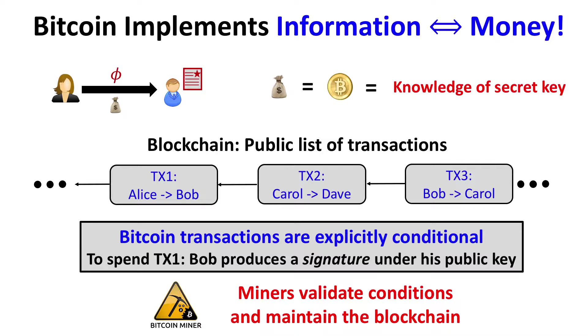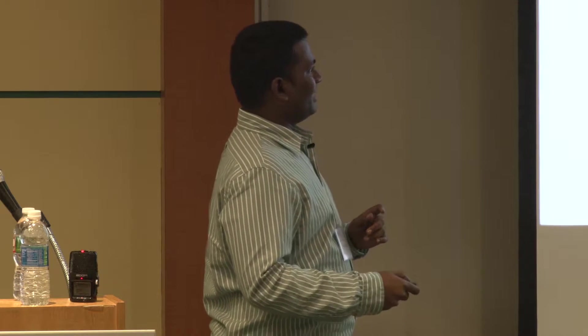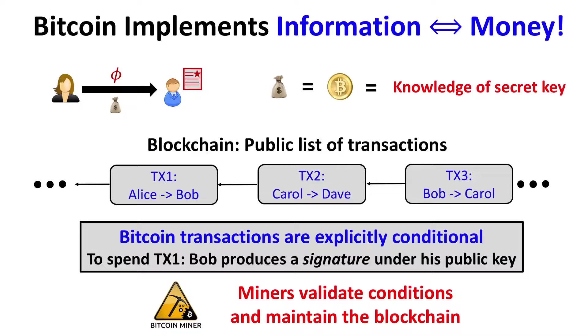In some sense, each of these transactions is conditional — you have to prove you are the legitimate sender. Bitcoin transactions are actually more general: they accept arbitrary conditions, with some limitations. Who is checking and validating all these things? This is where Bitcoin miners come in. They validate the conditions, maintain the blockchain, and make sure only correct transactions are included.